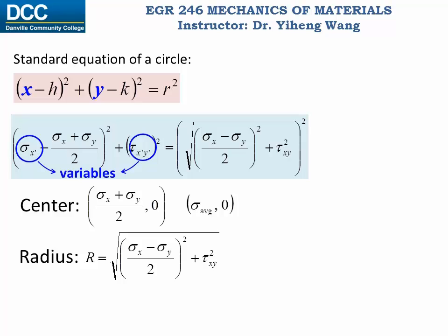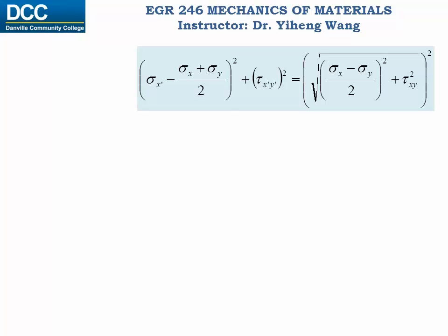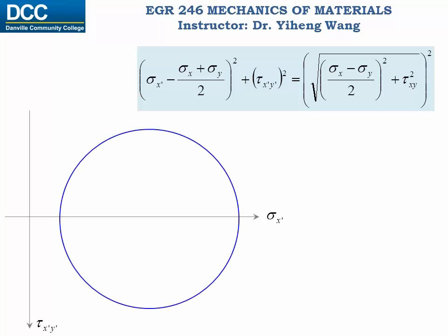Now we want to visualize this circle. Let's first set up the coordinate system. We use a horizontal axis to represent sigma x prime, and a vertical axis to represent tau x prime y prime. Notice that this axis is specially defined to be pointing downwards. On this coordinate system we draw a circle with center at coordinates sigma average and 0. Since the tau coordinate is 0, the center of this circle falls on the sigma axis. This distance is sigma average — sigma x plus sigma y over 2 — and the radius of this circle is this term.